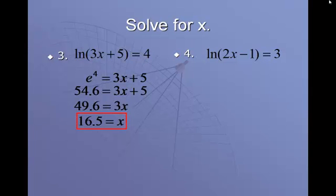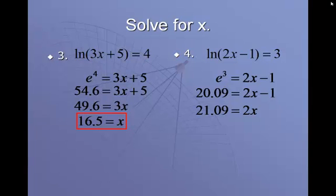Number 4, same process. Try this one and see if you can do it. We're going to use e to solve this. E to the power of 3 equals 2x minus 1. E to the power of 3 can be evaluated in your calculator. E is that second division, by the way, if you didn't know where it was. E to the power of 3 is 20.09. It's equal to 2x minus 1, so we're going to add 1 to this and get 21.09, and divide by 2 to get 10.55 for a final answer.